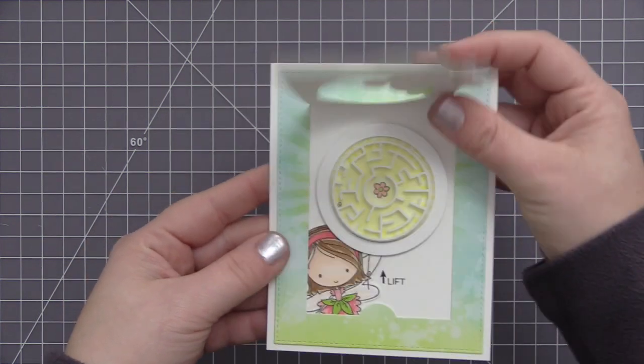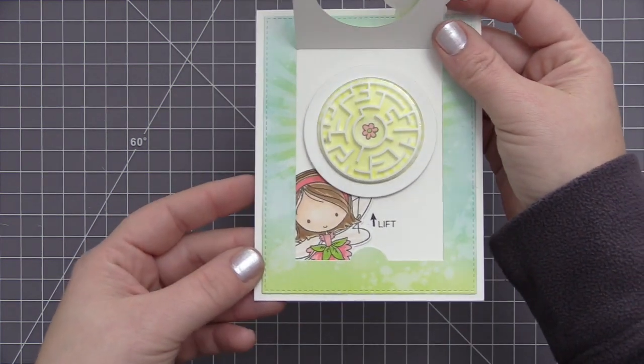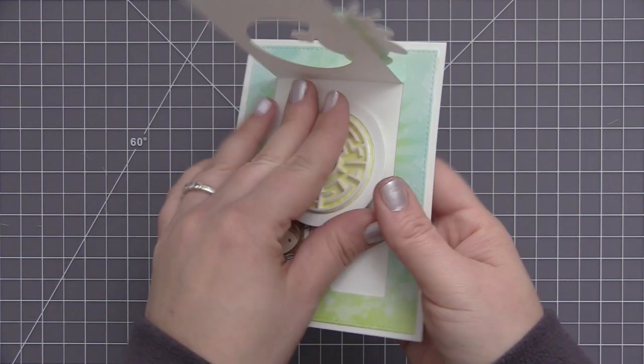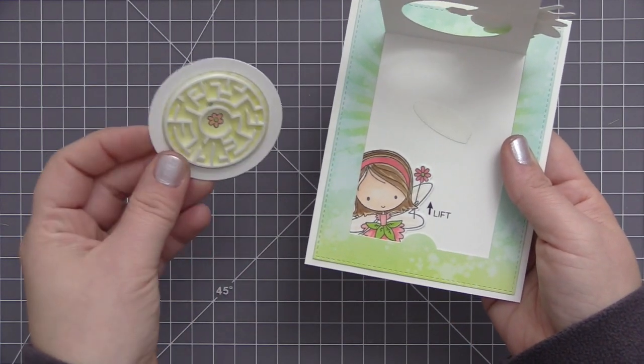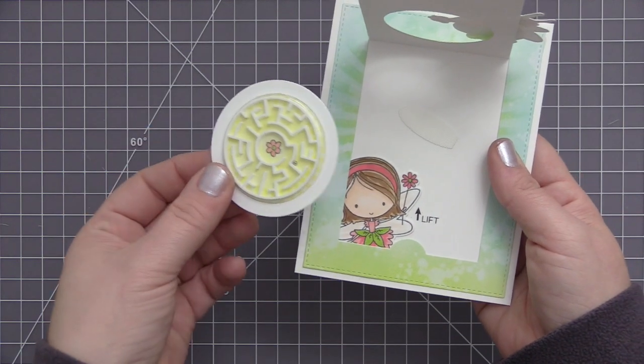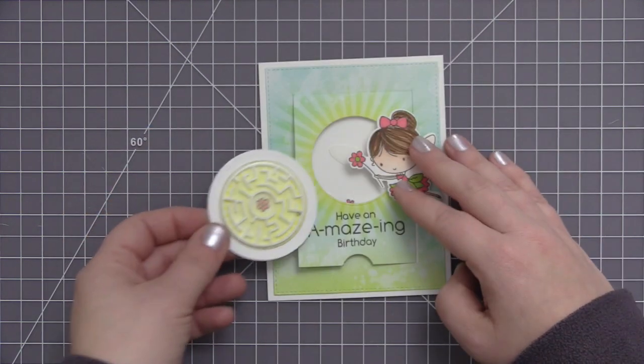Then to let the recipient know that the little maze game can be lifted off of there and taken out of the card, I used the new interactive label stamp set and stamped the word "lift" with a little arrow on the inside of the card there. And now we have this completed card where we have this fun interactive maze game that is completely standalone from the card, and then we have this really cute card that has this fun interactive detail.